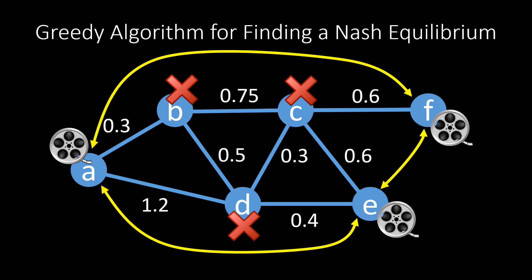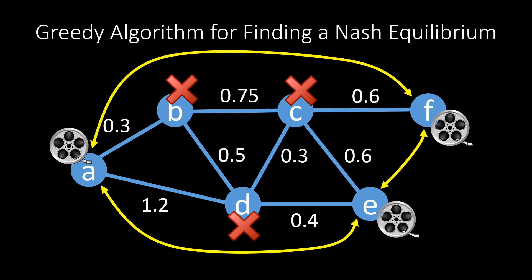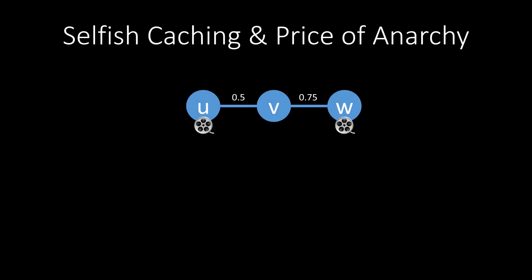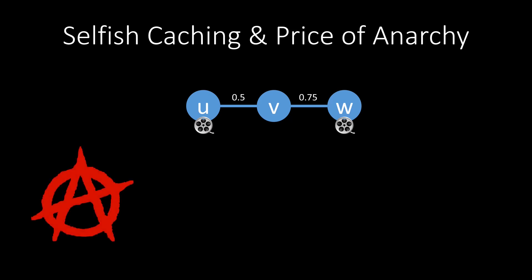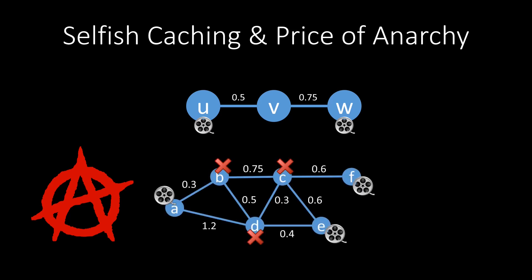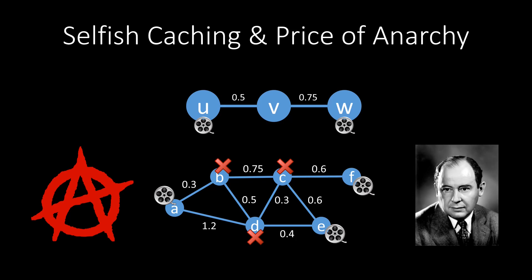This greedy algorithm also works for more general variants of selfish caching, for instance when the edges in the graph are directed, or when the nodes have different demands for the movie. To summarize: in this video, we discussed the selfish caching game as an example for analyzing a situation in distributed systems with selfish participants. We defined core concepts in game theory like the Nash equilibrium, the social optimum, and the price of anarchy, and we learned a simple greedy algorithm to compute a Nash equilibrium for selfish caching. Game theory and computation both go back to the fabulous John von Neumann, who introduced both fields when he was at Princeton in the 1940s, and before that studied at ETH Zurich. Thanks for watching this video.